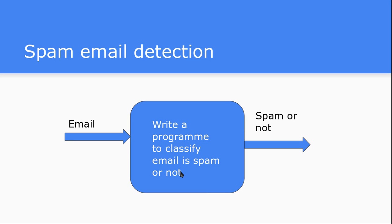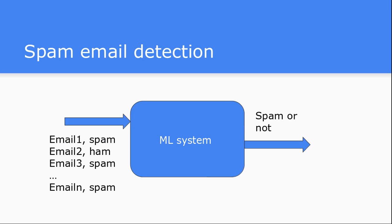How can this problem be solved with machine learning? Instead of giving just one email, we give the machine learning system a lot of emails, and each email is associated with either spam or not spam (ham). The machine learning system will automatically figure out the model associated with this data. There is no generic rule for what spam is, but when we give a huge amount of data to the system, it automatically figures out the rules for whether an email is spam or not.